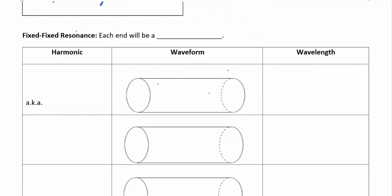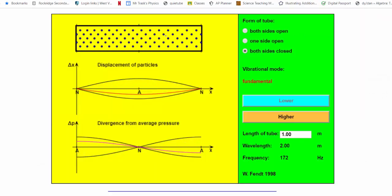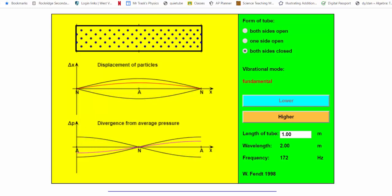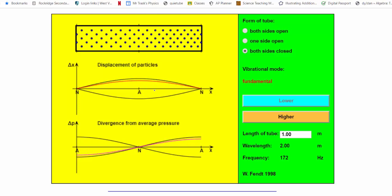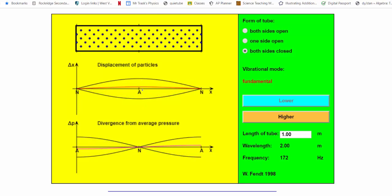Consider a fixed-fixed resonance tube where both ends are closed — each end will be a node. While it's hard to think of a musical instrument closed on both ends, you can draw an analogy to a guitar string: one end is fixed at the neck, the other at the body, and when you pluck it, the string vibrates at its natural resonance frequency.